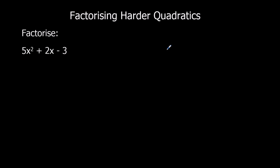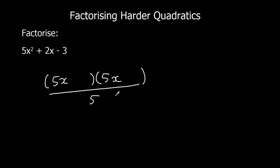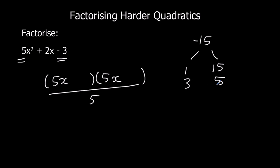We're going to do another example of the same thing. You can see the coefficient of x squared this time is a 5, so I'm going to go straight to 5x in both brackets and write it over 5. Now I need to do the first times the last: negative 3 times 5 is negative 15. The factors that multiply to make 15 and also add to make 2 — 15 is only 1 times 15 or 3 times 5. I can't use 1 and 15 to make a 2.